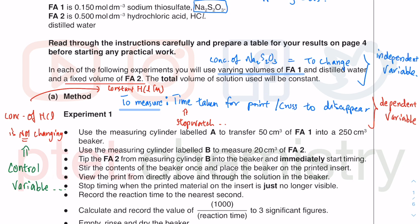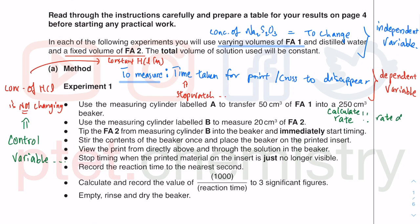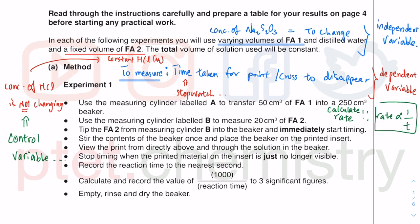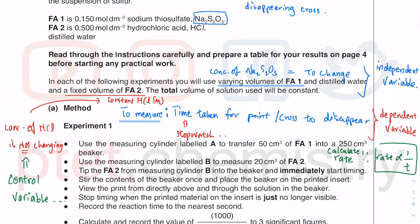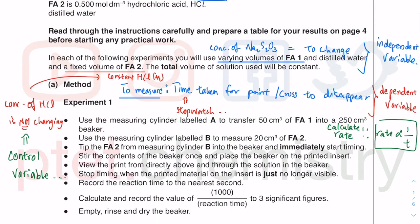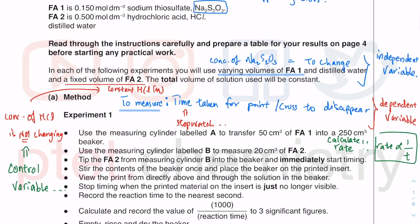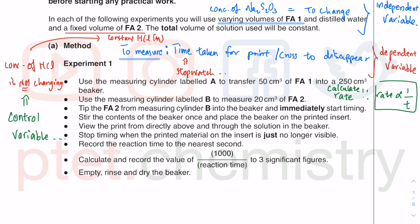What you want is to do with the rate, but you don't measure rate — you calculate it. Rate is inversely proportional to the time taken. In this particular experiment one, you use a measuring cylinder to transfer FA1 (your thiosulfate) into the beaker, and then put in 20 cm³ of FA2 (your hydrochloric acid) — so you have 50 plus 20 cm³. You stir them together.